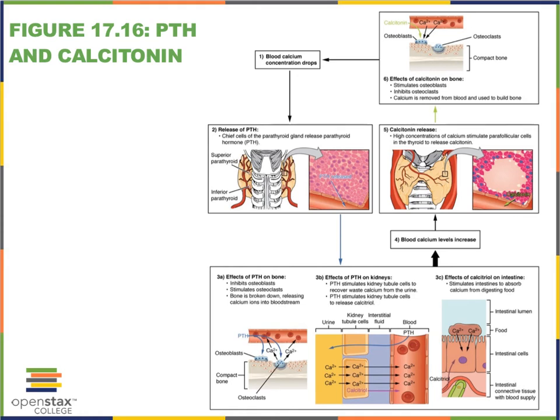One more thing to add before we leave this flowchart: at the level of the kidneys, calcium is reabsorbed from the filtrate in response to PTH binding. Typically, as calcium is reabsorbed, phosphate ions are secreted into the filtrate — so there tends to be this opposite exchange: calcium is exchanged for phosphate. This is important to be aware of, particularly when you study pathophysiology and electrolyte imbalances.